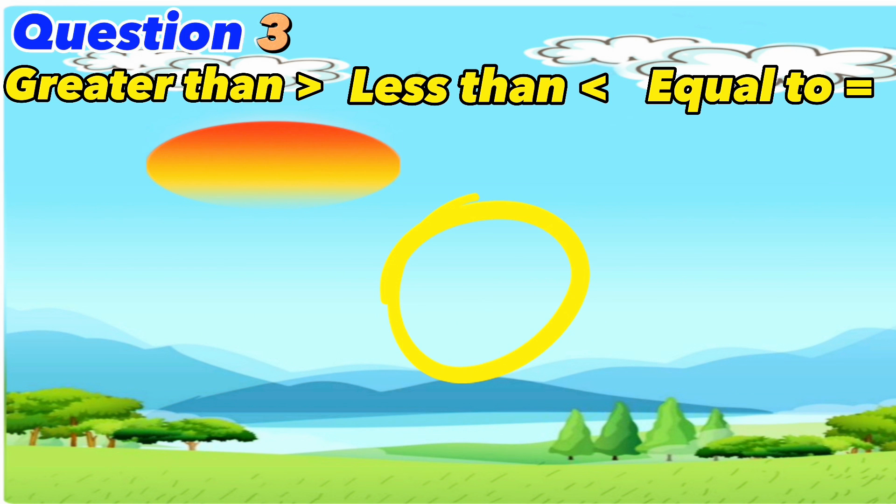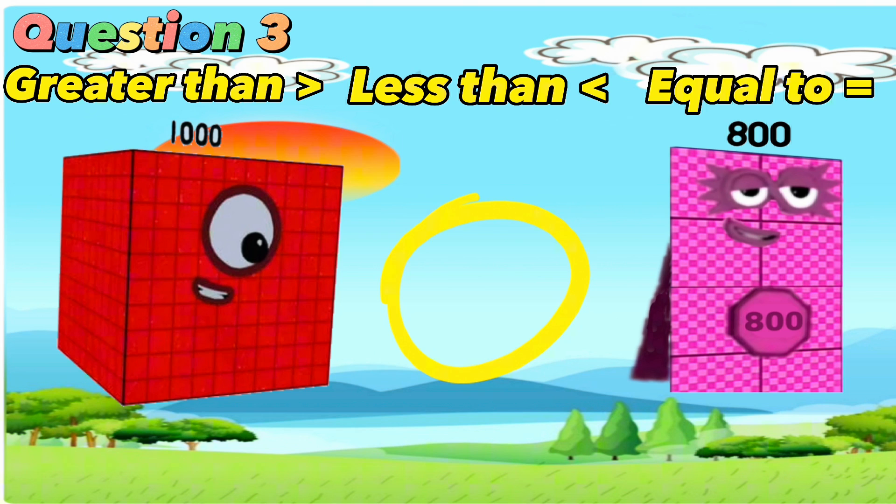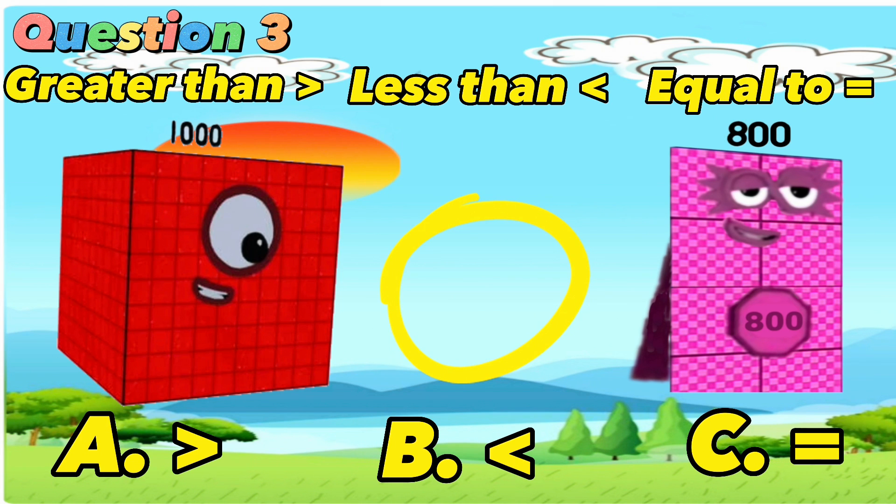Question number 3. 1,800. Is it A, greater than, B, less than, or C, is equals to? The correct answer is A. 1,000 is greater than 800.